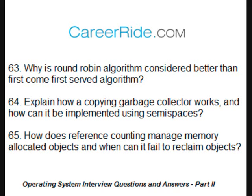Explain how a copying garbage collector works and how it can be implemented using semi-spaces. The copying garbage collector works by going through live objects and copying them into a specific region in memory. It presses through all live objects one by one in a single pass. Any object not copied in memory is garbage. It can be implemented using semi-spaces by splitting the heap into two halves, each a contiguous memory region. All allocations are made from a single half. When that half is full, the collector copies live objects into the other half. The first half then contains only garbage and is overwritten in the next pass.